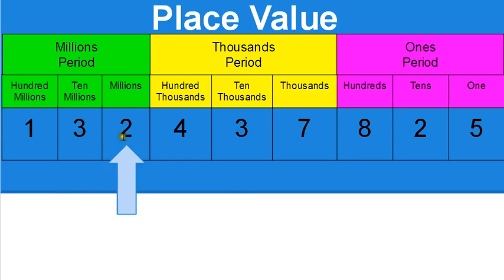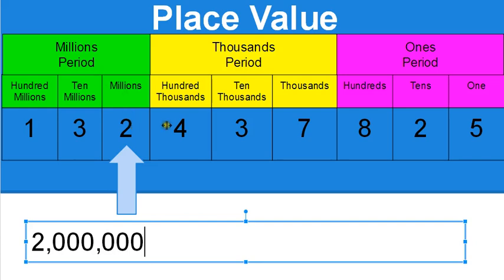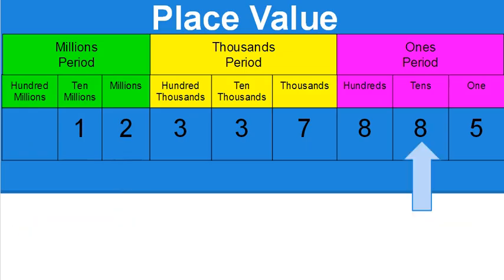This next one is all the way over here — one, two, three, four, five, six — it's the seventh digit over: ones, tens, hundreds, thousands, ten thousands, hundred thousands, into the millions period. So I have a two in the millions place. We separate every period with a comma, so every three digits there needs to be a comma. After the millions place there are six digits, so there are six zeros after — two in the millions place equals two million.